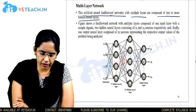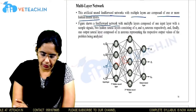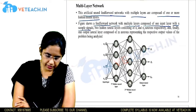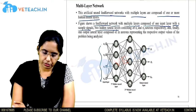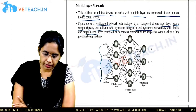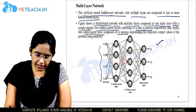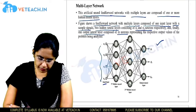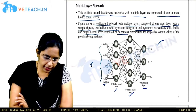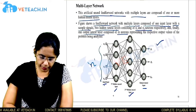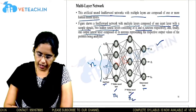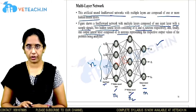The figure below shows a feed-forward network with multiple layers: one input layer with n sample signals, two hidden neural layers consisting of n1 and n2 neurons respectively, and finally one output layer consisting of m neurons. In this multi-layer neural network, the input layer has n nodes, the first hidden layer has n1 neurons, the second hidden layer has n2 neurons, and the output layer has m neurons.